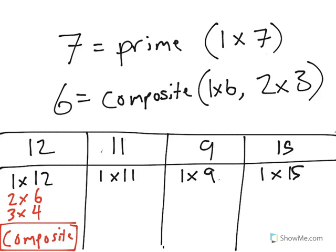11, however, the only way I can multiply to get to 11 is one group of 11, 1 times 11. That means this number is prime.